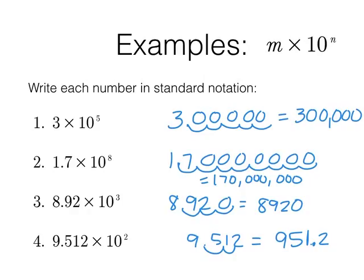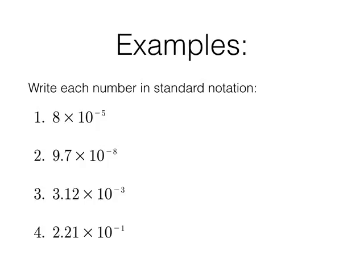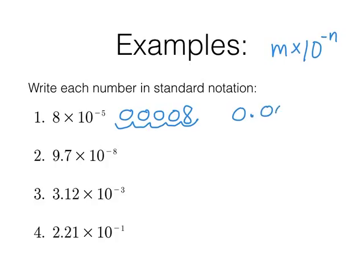Now the last set uses negative exponents. For 8 times 10 to the negative 5: write 8 with its decimal point and move it 5 places to the left — that gives 0.00008, which is 8 hundred-thousandths. For 9.7 times 10 to the negative 8: move 8 decimal places to the left. Since the 9 took one of those places, there are 7 zeros, giving a very small number. Remember: exponent does NOT equal number of zeros — it's the number of decimal places moved.